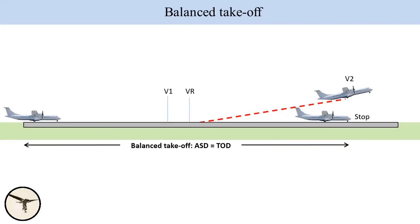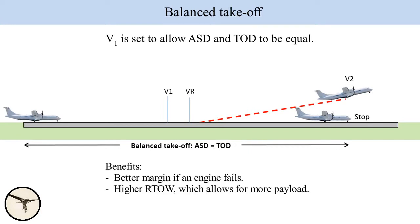You may have heard about balanced takeoff. This is when V1 is adjusted to allow accelerate stop distance and takeoff distance to be equal. This has two benefits: it gives better margin when a short runway is available in case of an engine failure, and it allows for maximum regulatory takeoff weight when the entire runway is used.